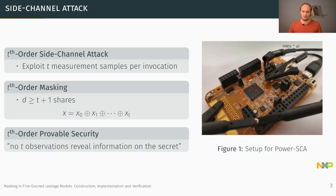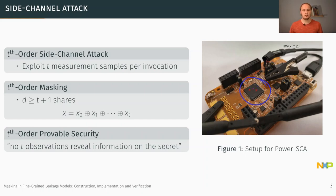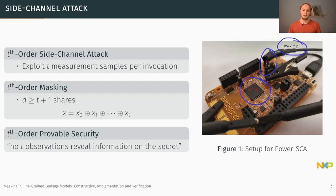Quick recap of side channel attacks. A side channel is a physical effect — for example, a processor executing an XOR of a sensitive value x with a value p causes a certain power consumption that is data-dependent due to the charges involved in the processor. An adversary is able to measure this power consumption or electromagnetic emissions and thereby launch side channel attacks to retrieve the sensitive value x.